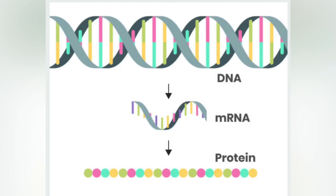In certain cases, some introns or exons can be either removed or retained in mature mRNA. This so-called alternative splicing creates a series of different transcripts originating from a single gene. Because these transcripts can potentially be translated into different proteins, splicing extends the complexity of eukaryotic gene expression and the size of a species' proteome.